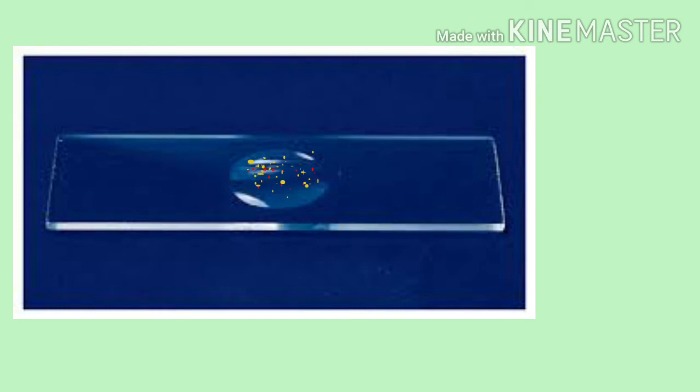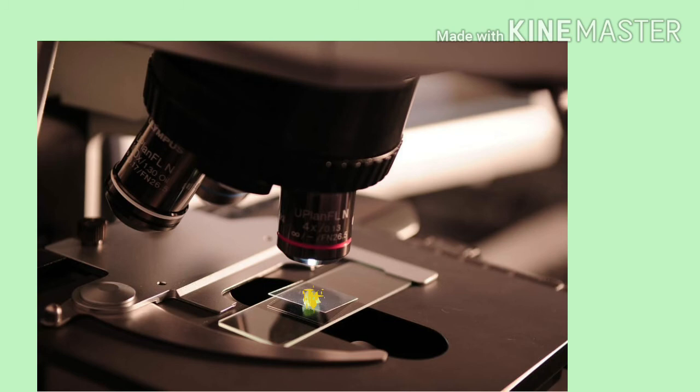We will see small dot like structures floating on water. These are pollen grains. Observe them under a compound microscope. We can see the pollen grains under the microscope.